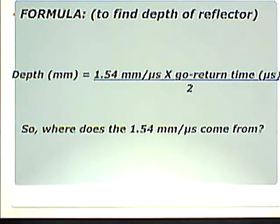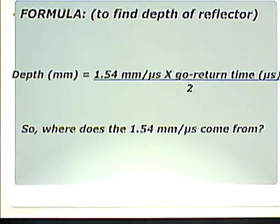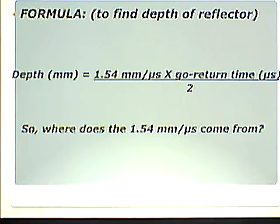The formula to find the depth of a reflector — depth in millimeters — is 1.54 millimeters per microsecond times the go-return time in microseconds, divided by 2. That 1.54 mm/μs is the speed of sound in soft tissue. It makes sense to take 1.54, multiply it by the go-return time, and divide by half, because we only want to know halfway — the one-way distance to the reflector, not there and back. That defines depth.